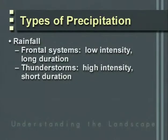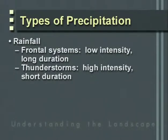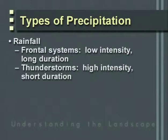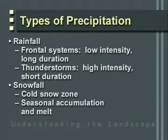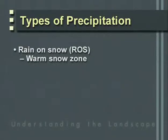There are several different types of precipitation, each resulting in different types of storm or streamflow. Rainfall occurs in two forms: frontal systems, which have low intensity and long duration, tend to cover large areas and are slow moving; and thunderstorms, which are spatially variable, often isolated, have high intensity and relatively short duration. Snowfall at higher latitudes and elevations accumulates through the winter. In transitional snow zones we could have snow mixed with rain, or rain-on-snow events.